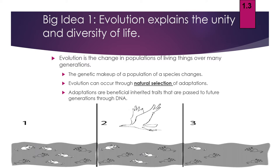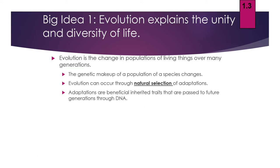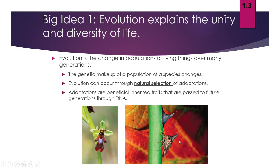Adaptations are defined as beneficial inherited traits that are passed to future generations through DNA. Over time, through the process of natural selection, you can see some pretty interesting adaptations evolve. For example, on the right is an insect that has evolved to look like a thorn, which helps it avoid predators. On the left, a plant has evolved to look like a specific kind of insect, which helps that plant get pollinated.